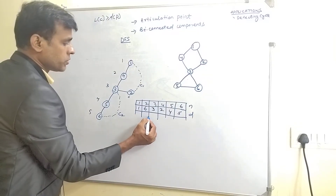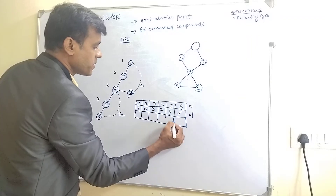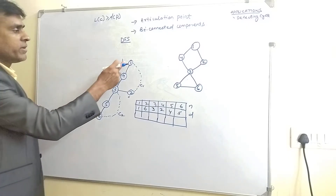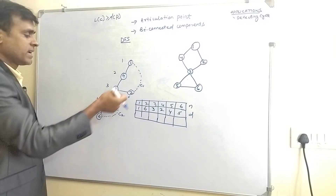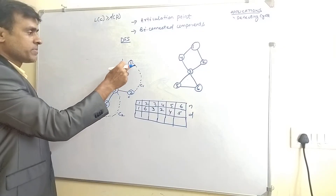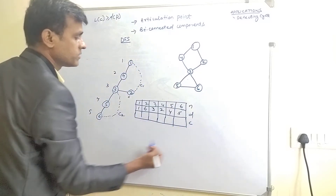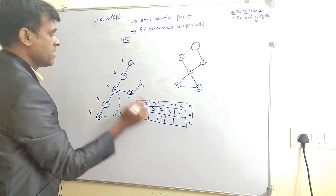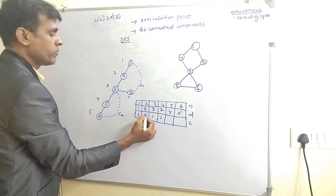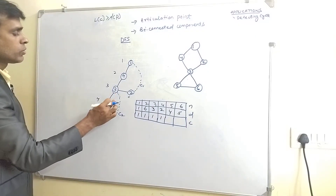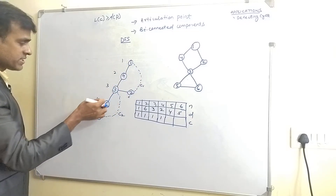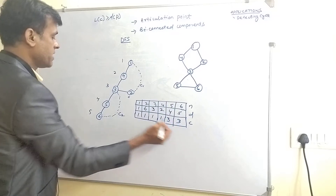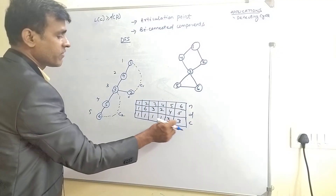Next, we calculate the lowest time — how many cycles we pass through to reach a node from its original position. From node 1, we pass through only one cycle, so its lowest time is 1. From node 4, going back to node 1, we also pass through cycle 1. Nodes 1, 4, 3, and 2 all have lowest time 1. For nodes 5 and 6, we pass through cycle C1 and another cycle, so their lowest time is 3.